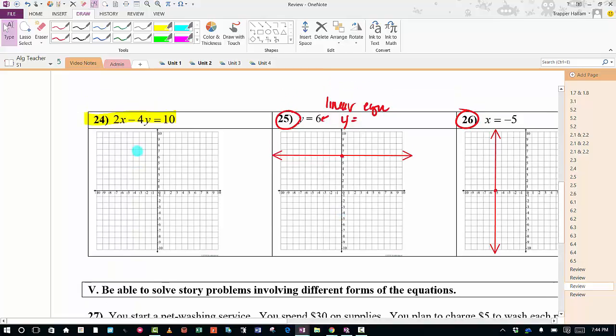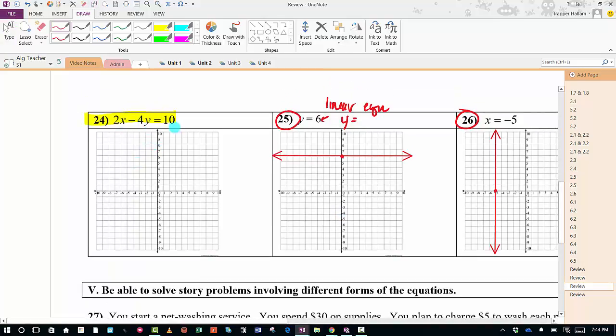It asks us to graph that. This is in standard form. You can graph from standard form. We just saw we could do the intercepts. So if I'm doing the intercepts, I'm going to find the x-intercept. So I'm going to get 2x equals 10. That's super simple to solve. Some of you will do that in your head. The x-coordinate for the x-intercept is 5. So I'm going to go to 5, 0. I'm going to make a point. That's pretty quick and easy.